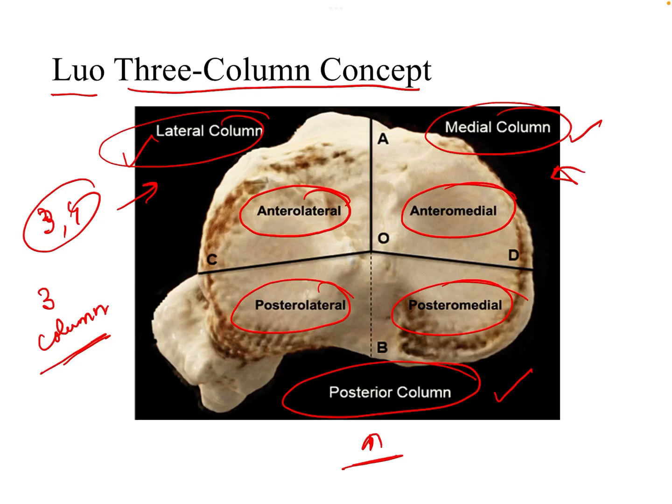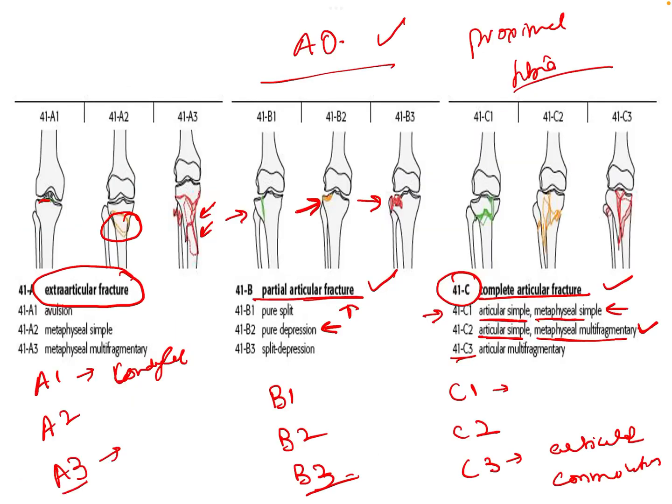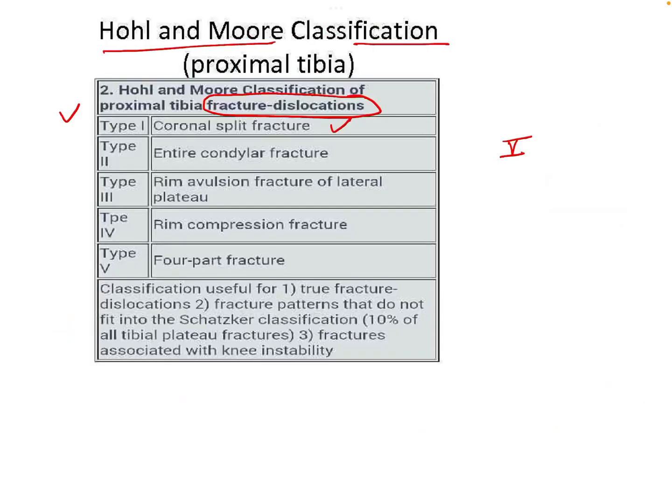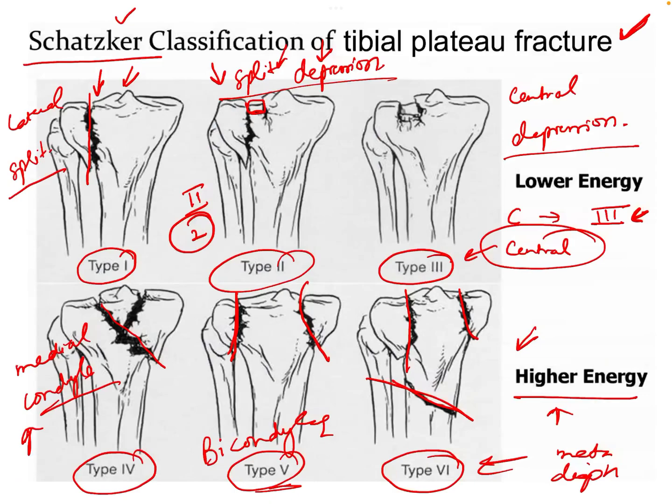In summary, the classifications of tibial plateau fractures include Lowe's 3-column concept, the AO classification, the Hall and Mohr classification, and most famously, the Schatzker classification of tibial plateau fractures.